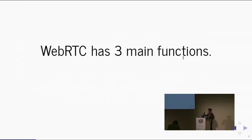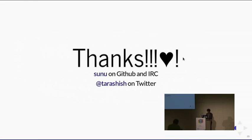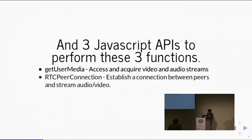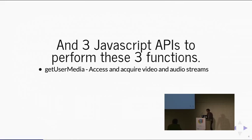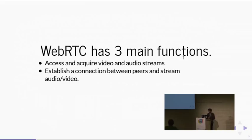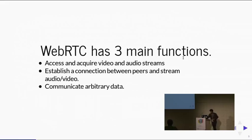WebRTC mainly has three functions. First is to access and acquire video and audio streams from your webcam or microphone. Second is to establish connections with your peers and actually transmit that video and audio data to other peers. The third thing is you can communicate arbitrary data — suppose you are building a game, you can just communicate JSON or binary files or whatever you want.